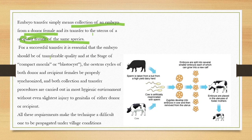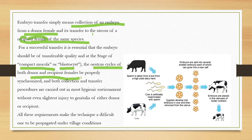For successful embryo transfer, the embryo should be transported at good quality and at the stage of compact morula or blastocyst. The estrus cycles of both donor and recipient females must be properly synchronized, and both collection and transfer procedures are carried out in a hygienic environment without the slightest injury to the genitalia.